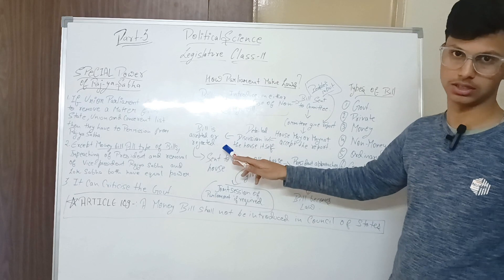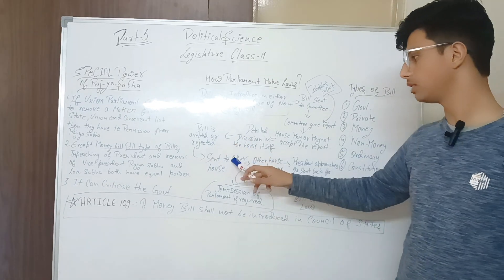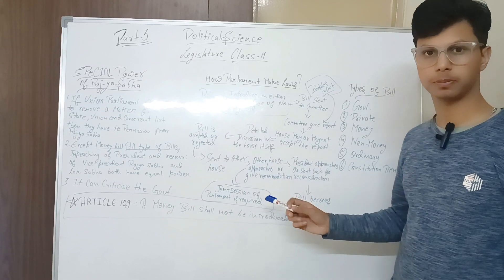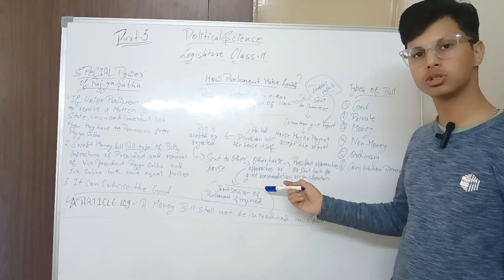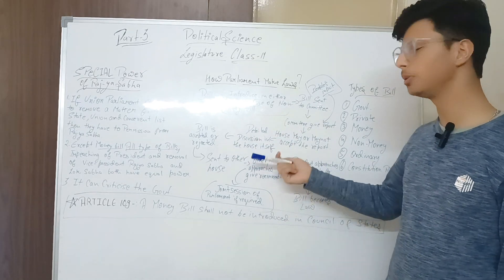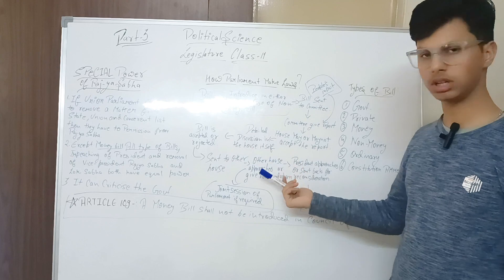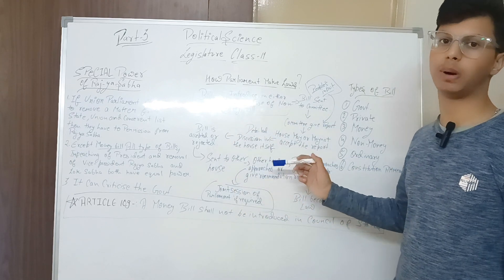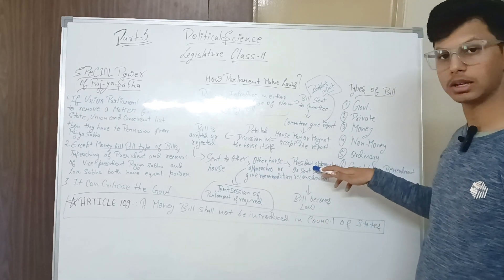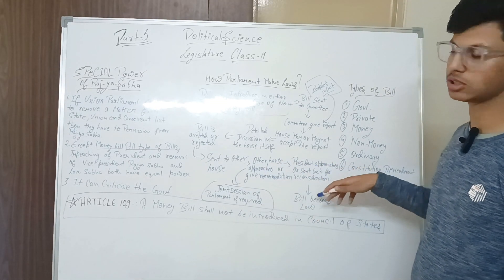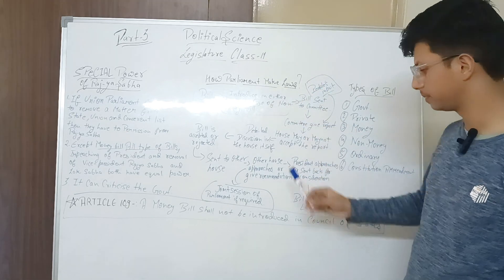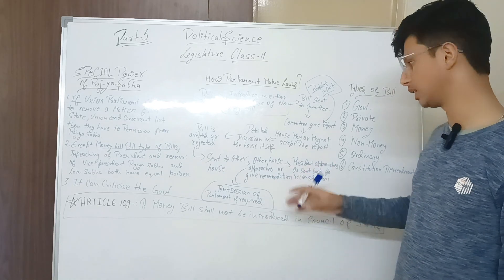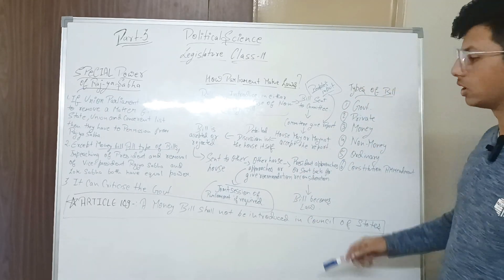Bill can be accepted or rejected. Then bill is sent to the other house. Other house can approve or give recommendations. The other house can either forward the bill or send it back for recommendations. If needed, joint session of parliament happens. Then bill goes to the president. President can either approve or send the bill back for reconsideration. After president's signature, we all know that the bill becomes law.